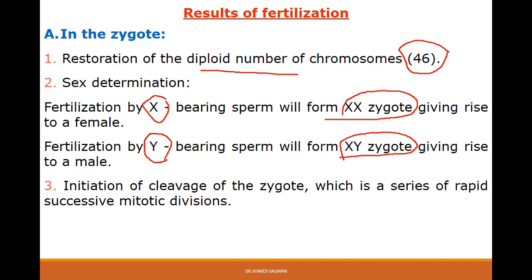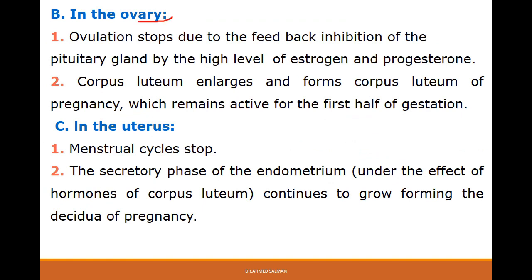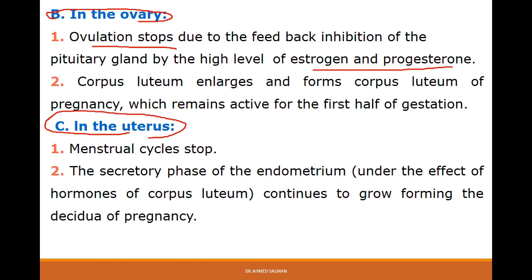What happens in the ovary after fertilization: ovulation is stopped due to the negative feedback from the pituitary gland, because of the high levels of estrogen and progesterone. The corpus luteum is enlarged and forms the corpus luteum of pregnancy, which remains active for about five months. In the uterus, the menstrual cycle stops, and the secretory phase of the endometrium under the effect of the corpus luteum continues to provide a good medium for implantation of the embryo.